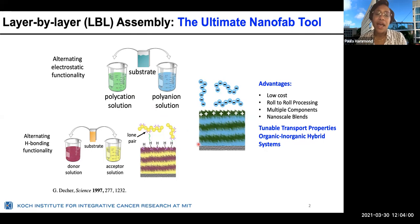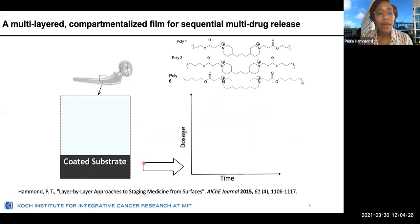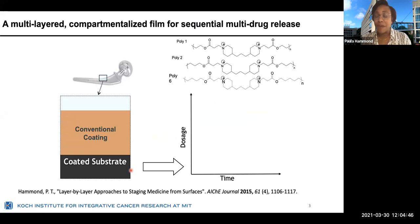We can incorporate a large number of macromolecules into these thin films. This is particularly interesting for drug delivery because we can incorporate a broad range of biologic drugs including RNA, DNA, and proteins into these thin film structures. Other kinds of interactions such as hydrogen bonding can also be used to build up these thin films. For regenerative medicine, we can coat anything from a biomedical implant surface to a scaffold with these releasing thin films.